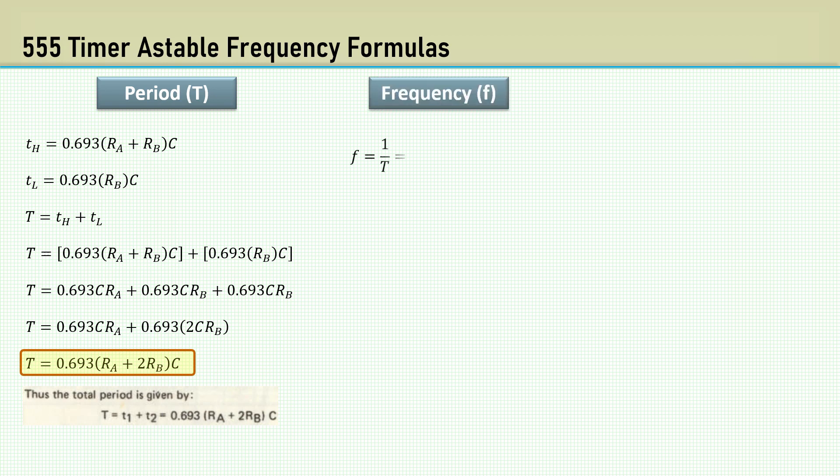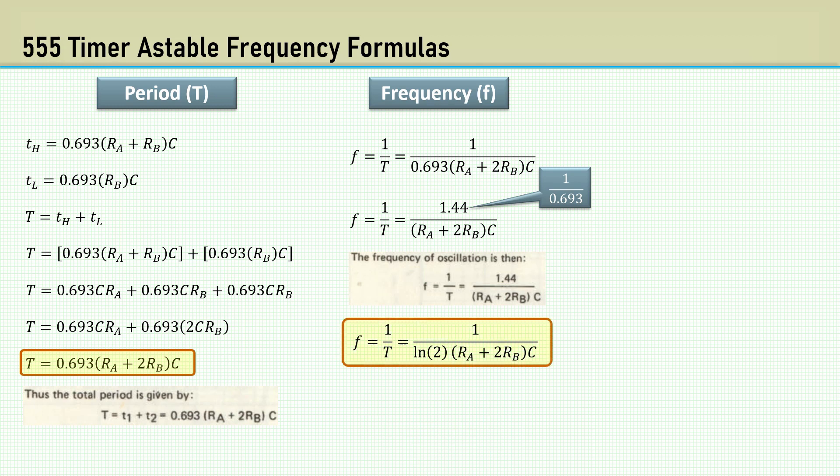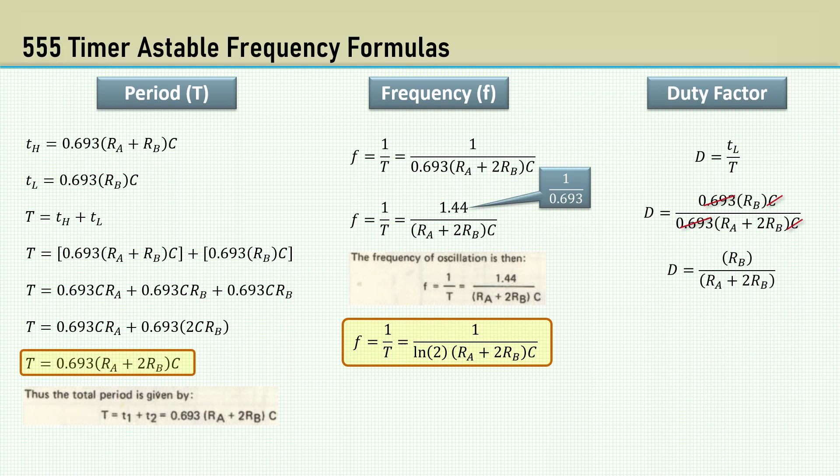Of course, the frequency is the reciprocal of time. The databooks save you time by taking the reciprocal of 0.693 as the numerator 1.44. It's satisfying to me to use the natural log of 2. The duty factor, for some reason in the databook, represents the time the output is low. The 0.693s and the Cs cancel, and we are left with this. Now that we took the mystery out of the 555 timer numeric constants, let's move on to another topic.